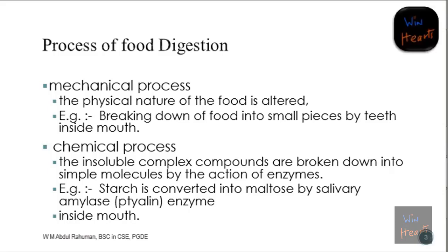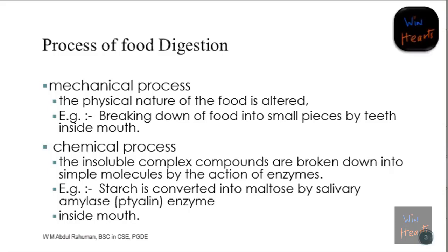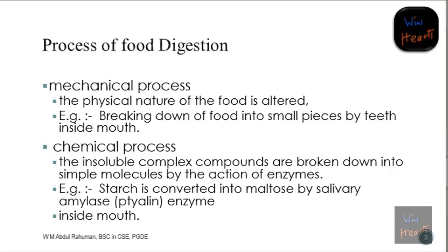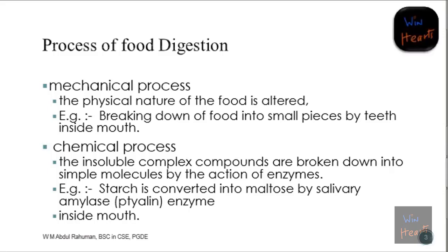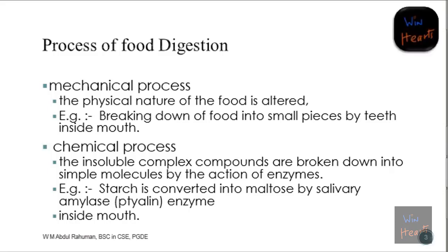When we speak about the chemical process, we use chemicals - that is what we mean. There are some complex compounds that are insoluble, so using enzymes - you know what enzymes are - we can convert them into a simpler format. For example, in our mouth we have salivary glands. Using salivary amylase, which we call ptyalin, we can convert starch into maltose.